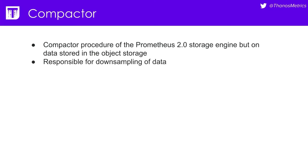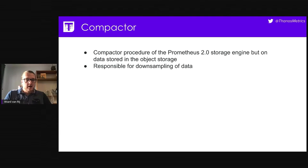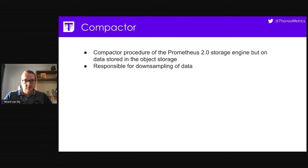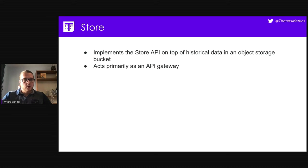We have the compactor, which is basically a procedure that Prometheus hasn't done yet. Because we are storing data to the object store, Prometheus isn't compacting our data — and this is where the compactor comes in. The compactor component allows you to compact the data more efficiently. It's also responsible for downsampling our data for longer-term metrics, which speeds up queries. We also have the store component, whose core feature is to act as an API gateway to our object store, allowing us to query historical data.